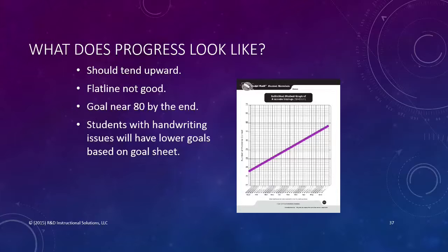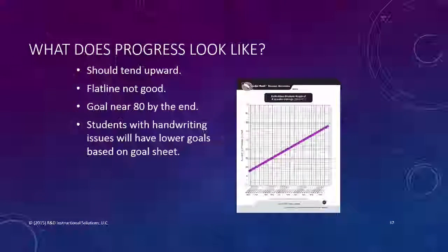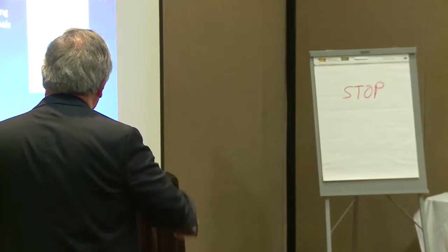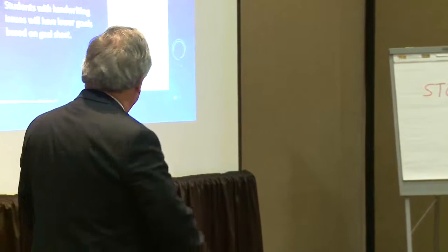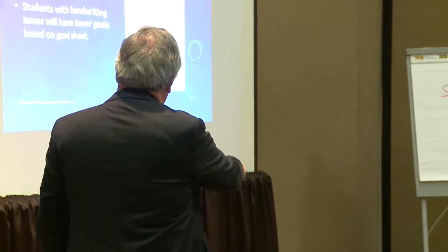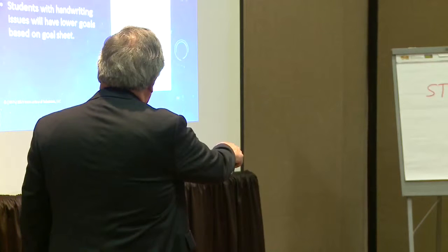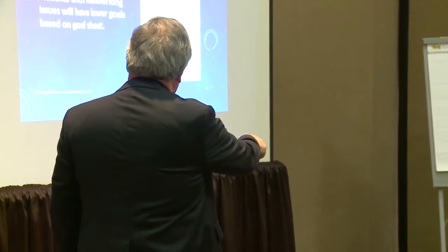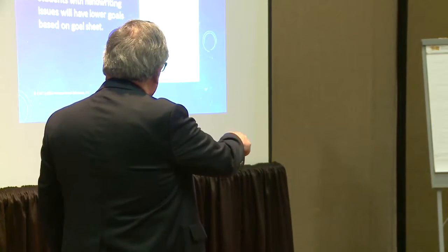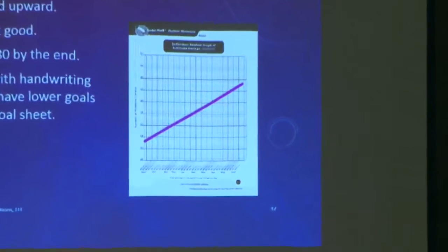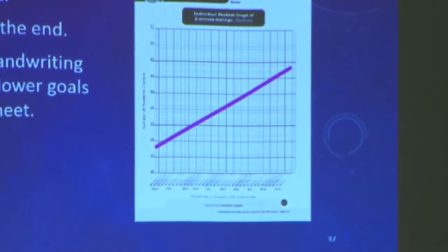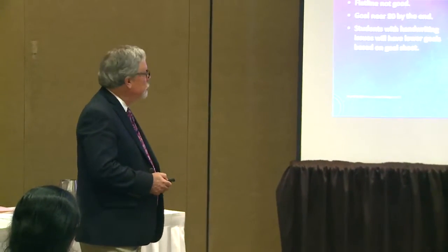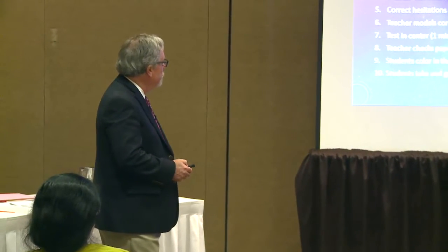For students with handwriting issues, the goal is around 80 near the end, unless students have handwriting goals — then it's lower. A straight aim line is drawn between the student's starting score and their goal. For kids on IEPs, this is their present level of performance, and the goal is the two-minute goal. Each week when you give the test, you graph the score. If they're above the aim line, they're on the way to meeting their goals. If they're below, they need extra practice and more time devoted to learning. That's how IEPs are supposed to work.